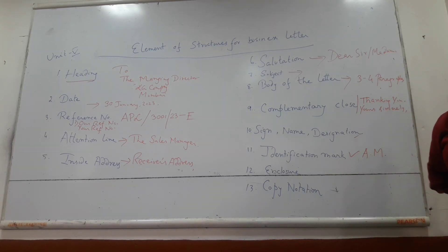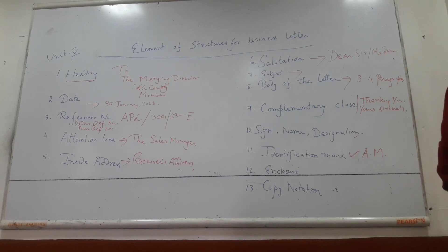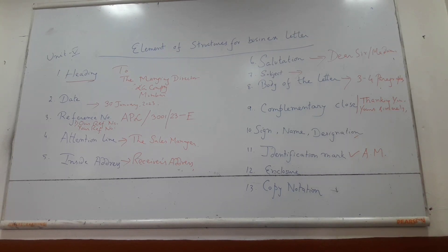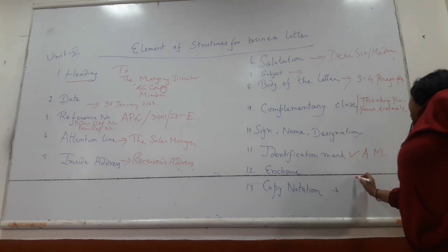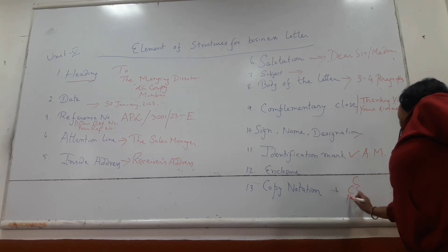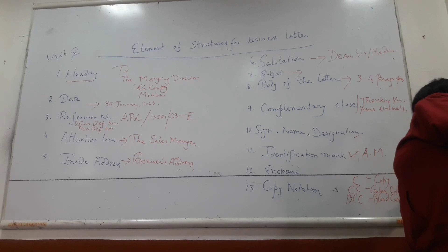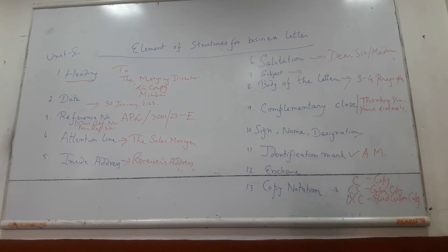Coming to the next part, that is called enclosure. What is enclosure? Enclosure is the attachment of the business letter. For example, whenever you are coming for admission, you have to write all your details in a form — in this way, enclosure is the attachment you write with the business letter. And coming to the last part, point number 13, that is called copy notation. Copy notation refers to whom we will have to deliver our letter. Copy notation has three types: C means copy, CC means carbon copy, and BCC means blind carbon copy. This is how we write all 13 points of the business letter, which are called the elements of structure for the business letter.